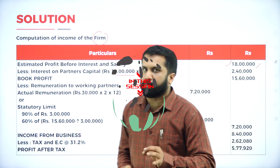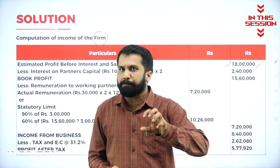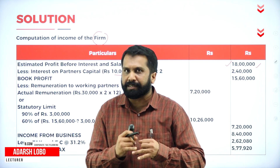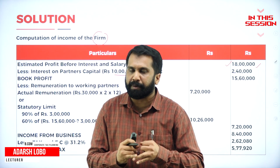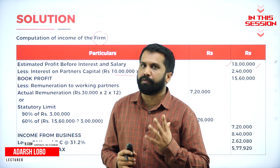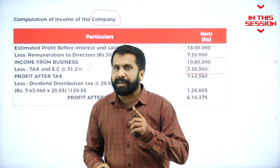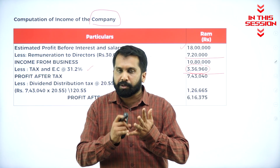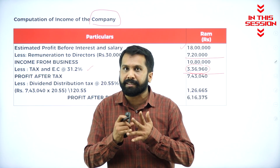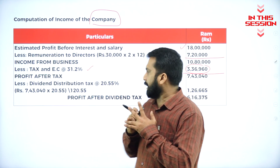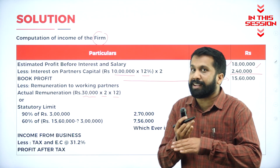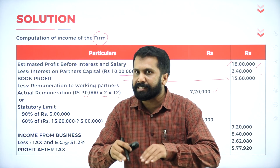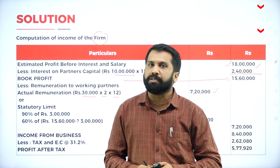To find out your book profit, the procedure is very simple: net profit minus interest on capital will be your net profit. In case of a company, there are two taxes: one is normal tax and one more is dividend distribution tax. Actual remuneration or standard remuneration, whichever is less, we are supposed to consider.